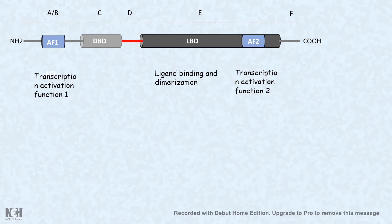The ligand binding domain is the most important one, which binds to the ligands. This ligand binding leads to dimerization, either homodimerization or heterodimerization, which we would look at in this video. The most important domain is the DNA binding domain, or DBD, which has the DNA binding feature.